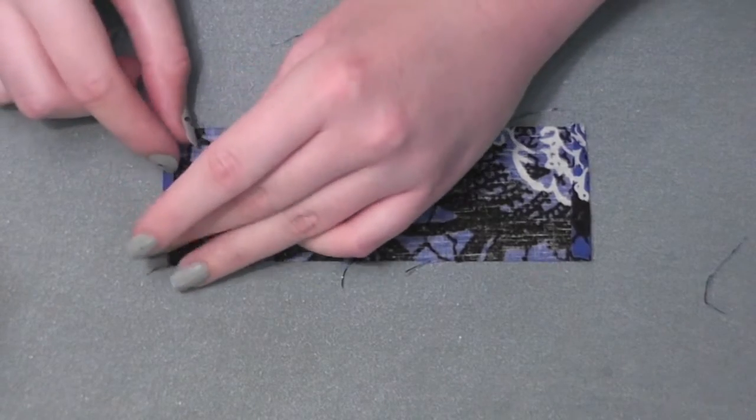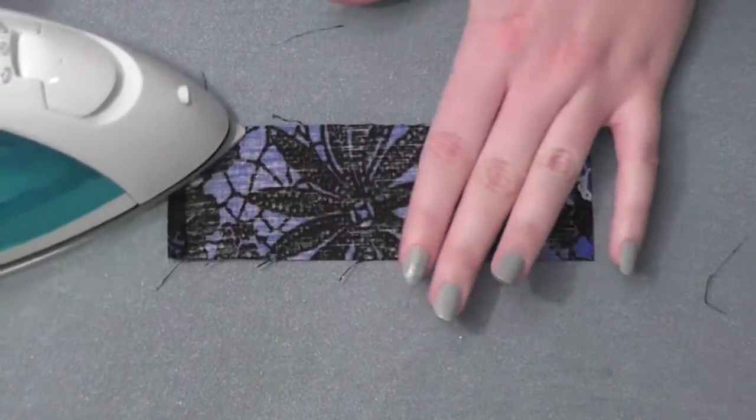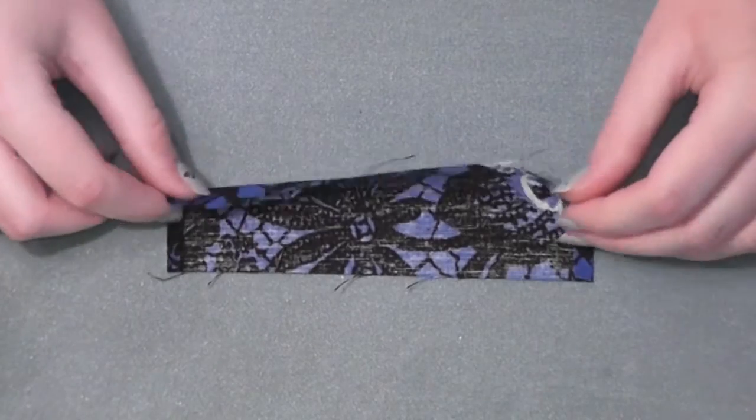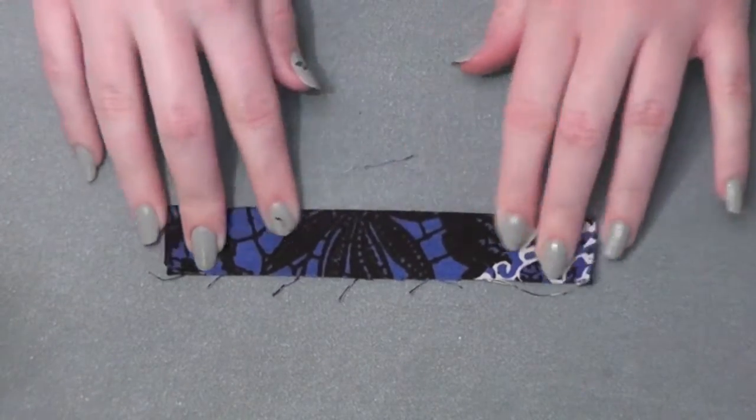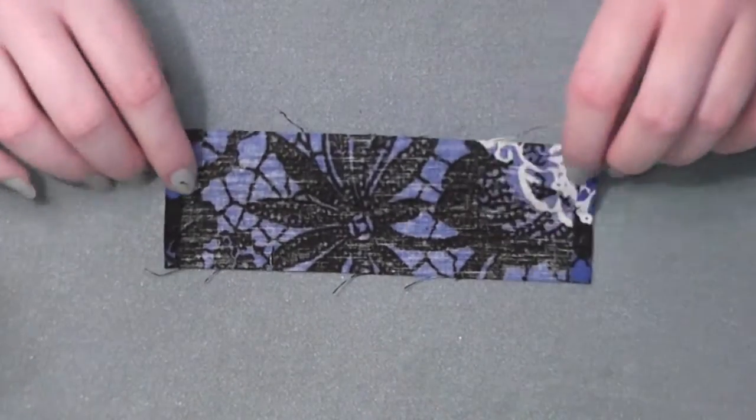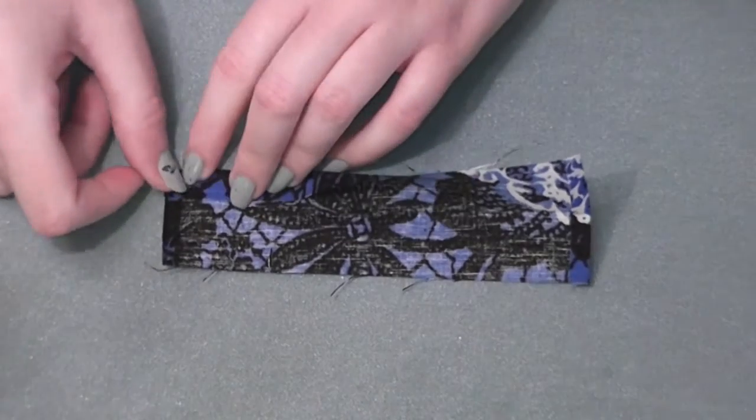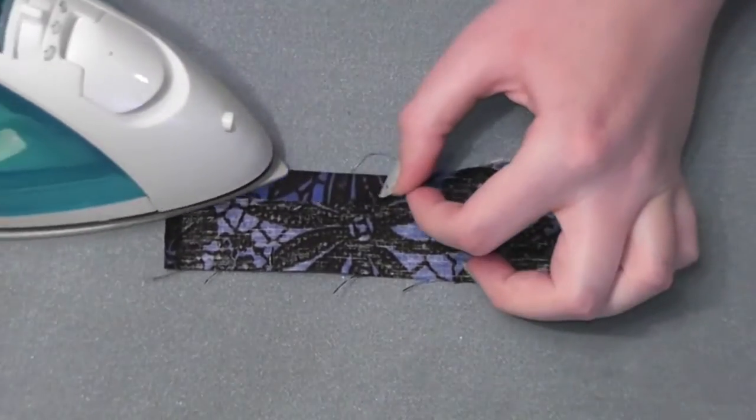Fold and iron both short sides of the cotton in about an eighth to a quarter of an inch to create neat edges. Now fold the fabric in half and lightly press with your fingers so you have a guideline to follow in the center, and then fold one raw edge into that center guideline and iron it down.